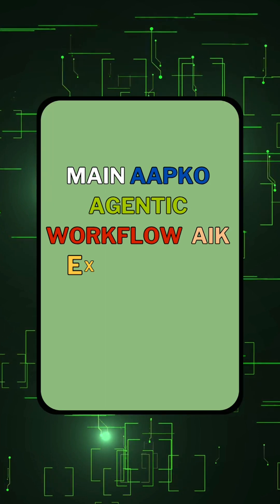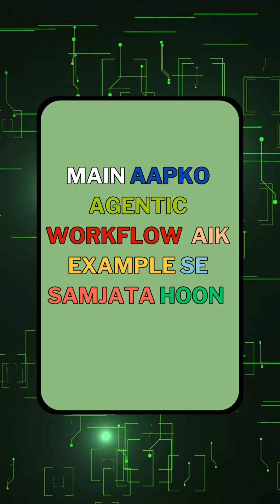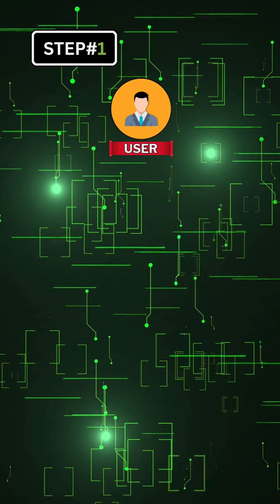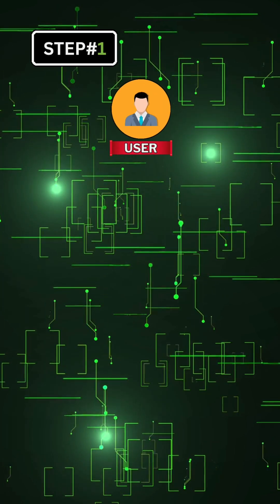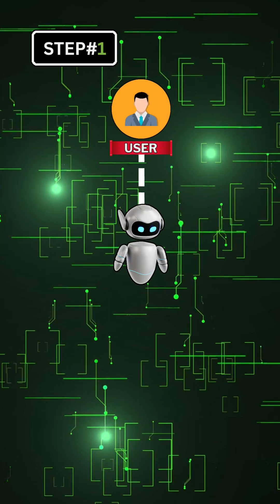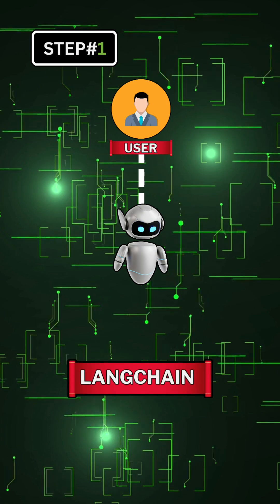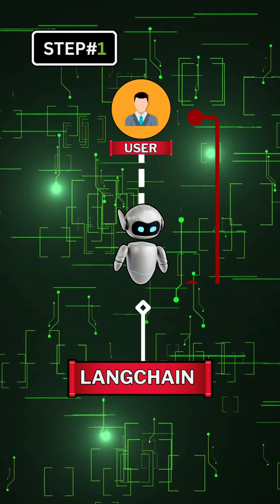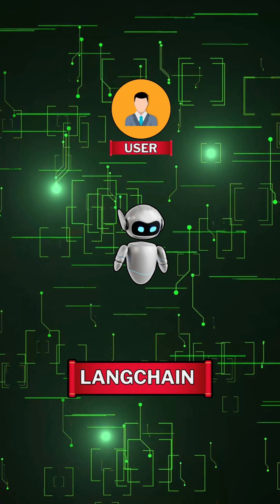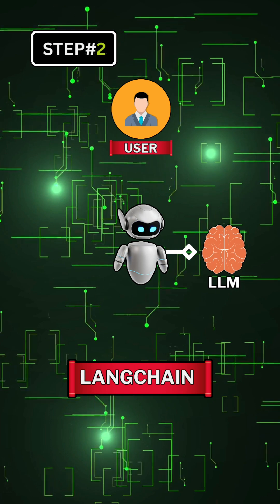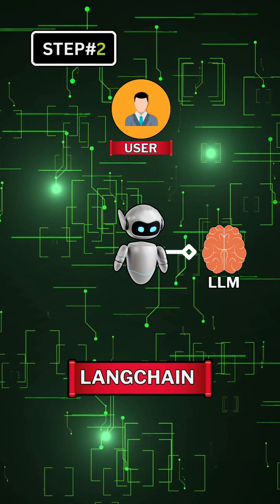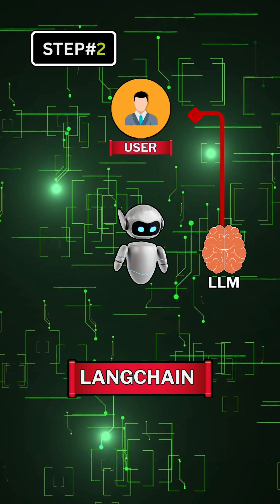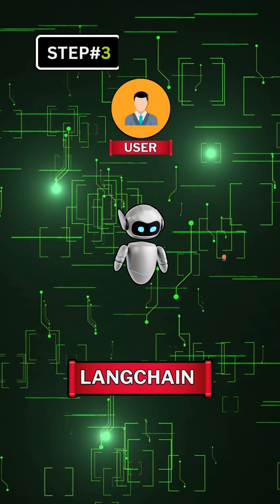I will explain the agentic workflow in six steps. Step one: the user sends a query to the AI agent, and LangChain activates an AI agent to handle the user's task. Step two: the agent uses the LLM's reasoning to discuss and plan, so that it can give the best response to the user's query.